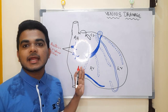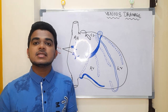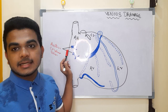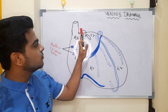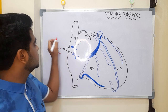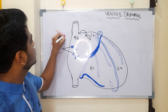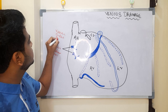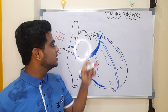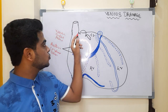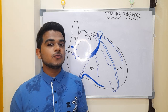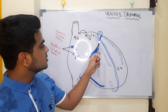Both are anterior cardiac veins. The second one is vena cordis minimi. Whenever we dissect the right atrium, on the medial wall of the right atrium there is a small pore-like structure — that is the vena cordis minimi. It is a very small pore-like structure and directly drains into the right atrium. So these two veins are vena cordis minimi and anterior cardiac vein.